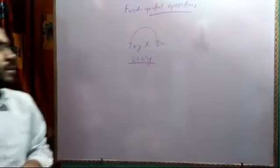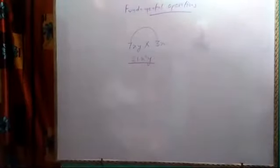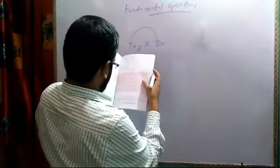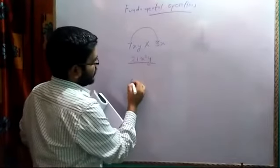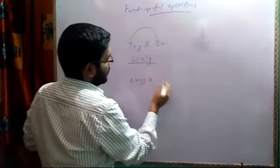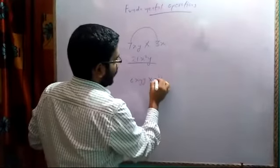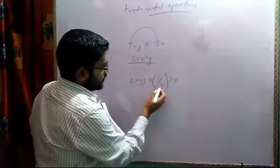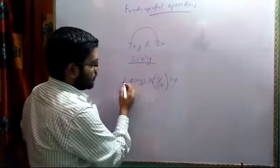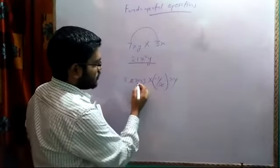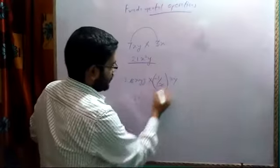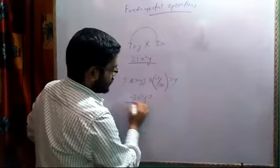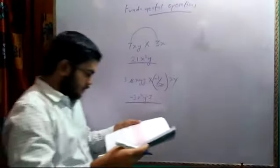Now if I have a negative number like 6xy multiplied with minus 1/2 xy, then the answer will be: 2 ones are 2, 2 threes are 6, and minus 1 into minus 1 will be equal to positive 3. So x into x becomes x square, y into y becomes y square, and z is only on one side so it is copied as is. I hope all of you know how to multiply numbers.